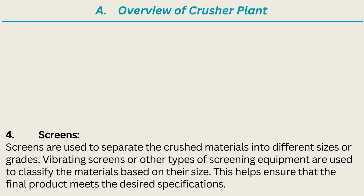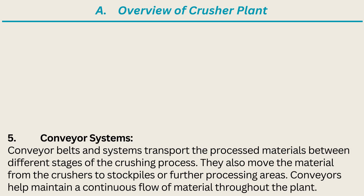4. Screens. Screens are used to separate the crushed materials into different sizes or grades. Vibrating screens or other types of screening equipment are used to classify the materials based on their size, helping ensure that the final product meets the desired specifications. 5. Conveyor Systems. Conveyor belts and systems transport the processed materials between different stages of the crushing process. They also move the material from the crushers to stockpiles or further processing areas, maintaining a continuous flow of material throughout the plant.